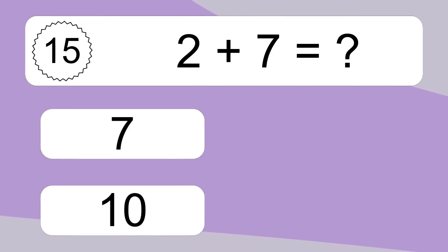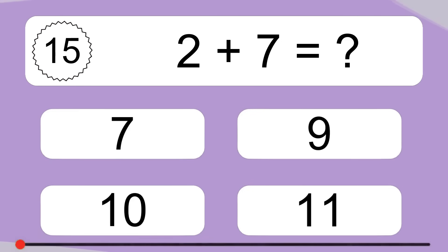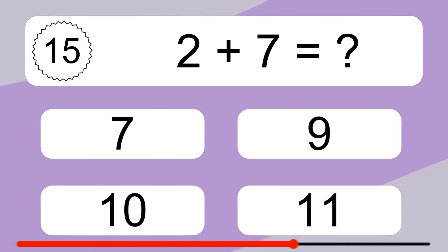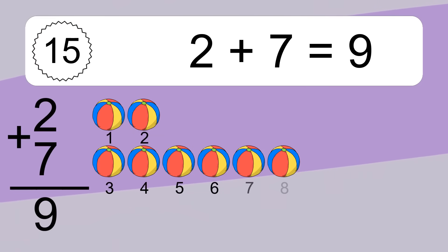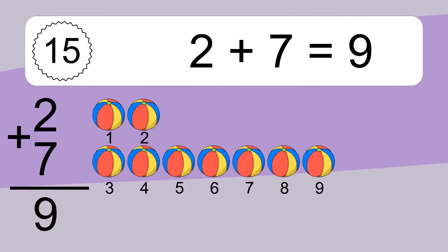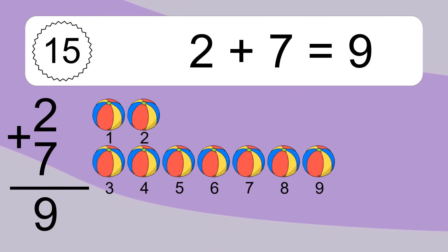2 plus 7 equals what? 2 plus 7 equals 9. Let's count it: 1, 2, 3, 4, 5, 6, 7, 8, 9.